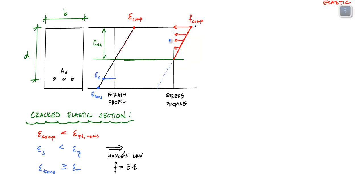To calculate the stress in the steel, we multiply the strain in the steel by the modulus of elasticity of steel, Es. These strains suggest that the compressive stress at the top of my beam is less than the stress at the proportional limit of concrete, and my steel stress has not yielded, so it's less than f_y, the yield strength of steel. This is my cracked elastic section behavior.